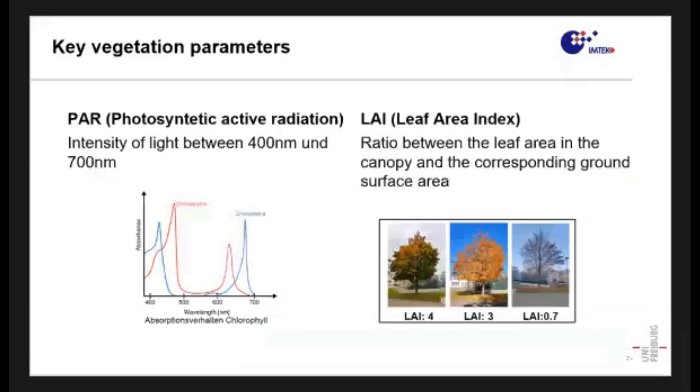Two key parameters for measuring the development of the plant are the photosynthetic active radiation and the leaf area index. Photosynthetic active radiation is the intensity of light between 400 and 700 nanometer, which is the wavelength necessary for photosynthesis and plant growth.